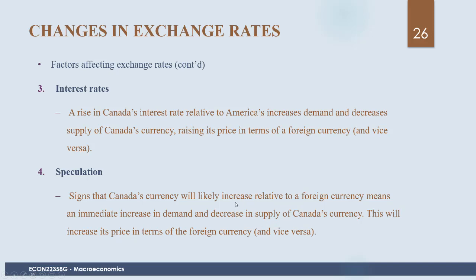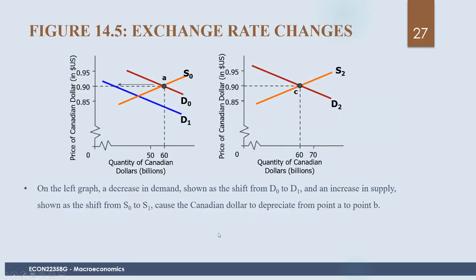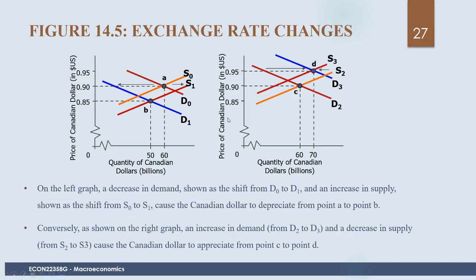If everyone thinks something is going to happen, they behave in a way that makes it happen. On the diagram, a decrease in demand (shift from D0 to D1) combined with an increase in supply (shift from S0 to S1) causes the Canadian dollar to depreciate from point A to point B. Conversely, an increase in demand (D2 to D3) combined with a decrease in supply causes the currency to appreciate from point C to point D. Shifts in demand and supply curves affect the new equilibrium exchange rate.